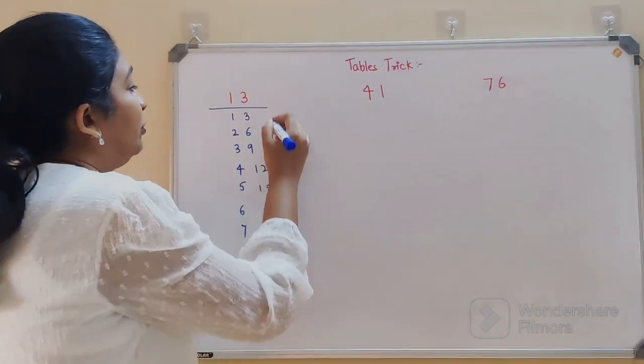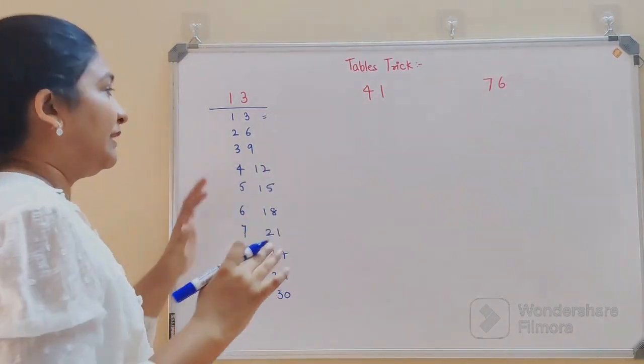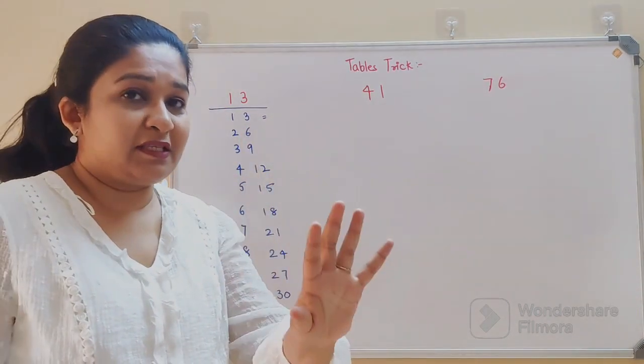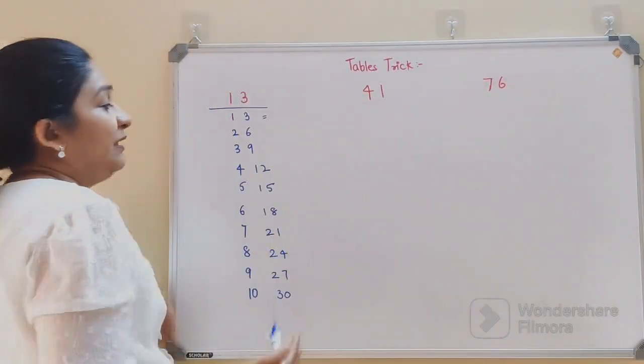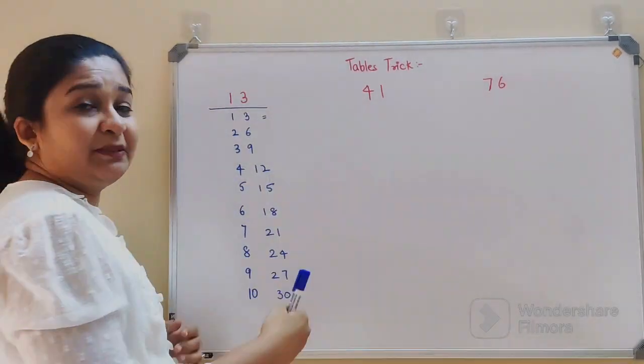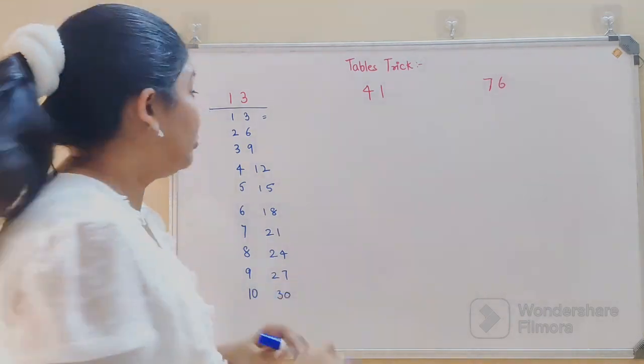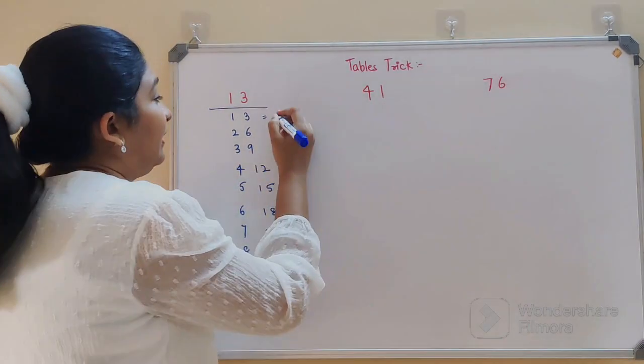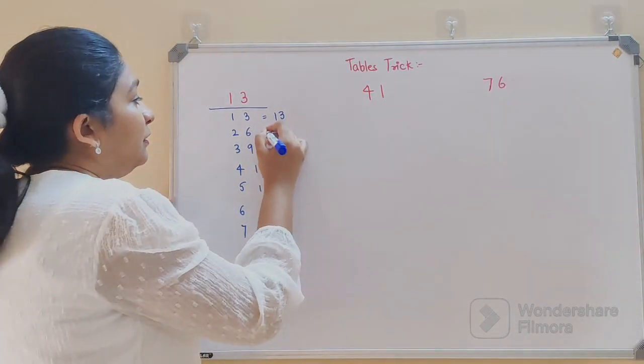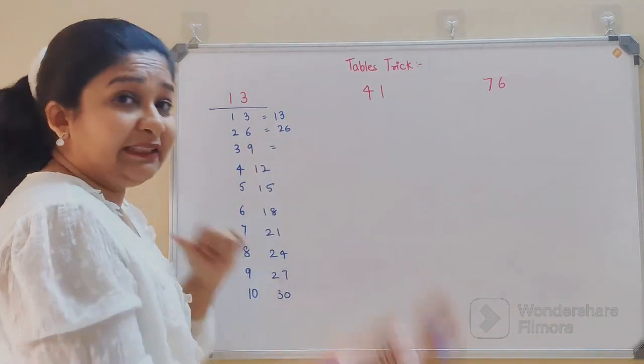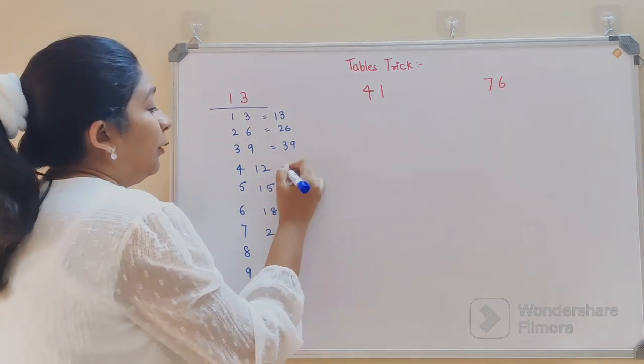Now please understand - if there are only two digits, and in your last part of your answer, basically the unit's part, if it has just a single digit, then you don't have to touch it. You just have to leave it as it is. So 13 into 1 is 13, 13 twos are 26, 13 threes are 39.